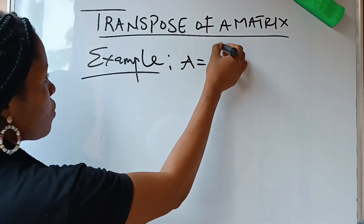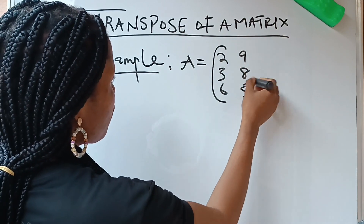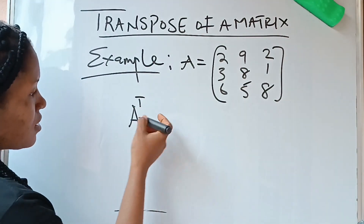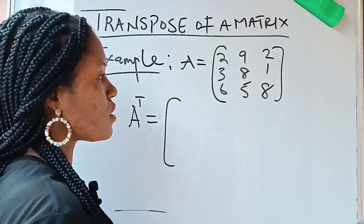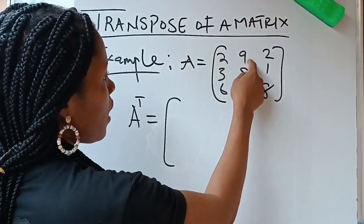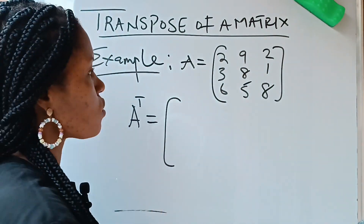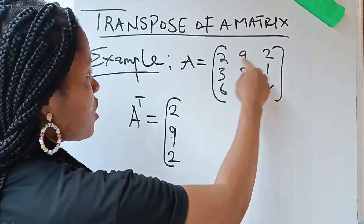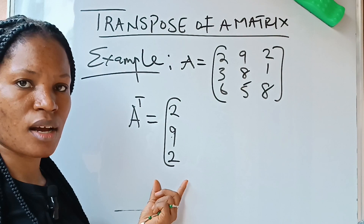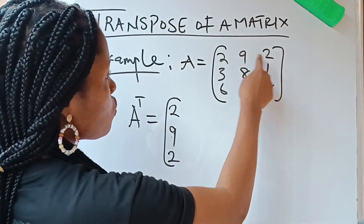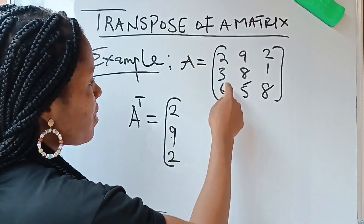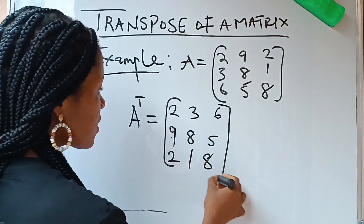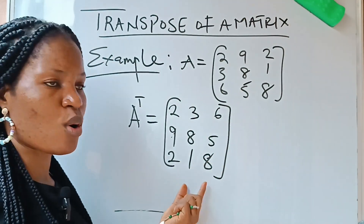If A is equal to [2, 3, 6; 9, 8, 5; 2, 1, 8], and you are asked to find A transpose. The A transpose is equal to — all you need to do is to interchange your rows to columns. Notice that 2, 9, 2 are written horizontally as the first row. You are going to turn it vertically to form the first column. We are going to turn 2, 9, 2 vertically. The same thing with 3, 8, 1 — we write it vertically. The same thing with 6, 5, 8 — we write it vertically. This becomes your A transpose.